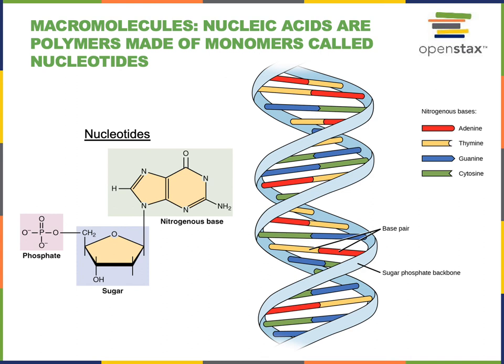The nitrogenous bases are four different types found in DNA, and we can see those four different types shown as different colors in the illustration on the right. Adenine is shown in red, thymine is shown in yellow, guanine is shown in blue, and cytosine is shown in green.